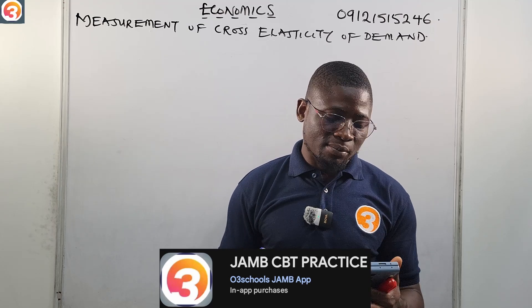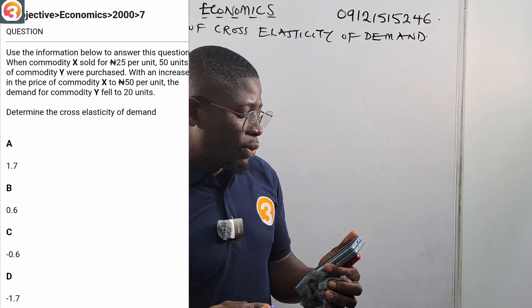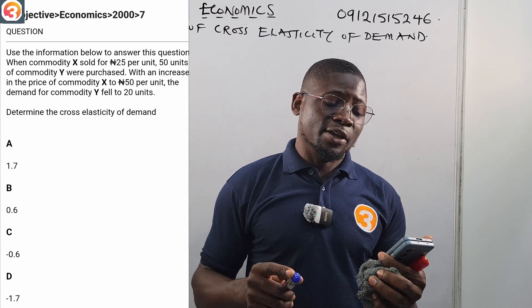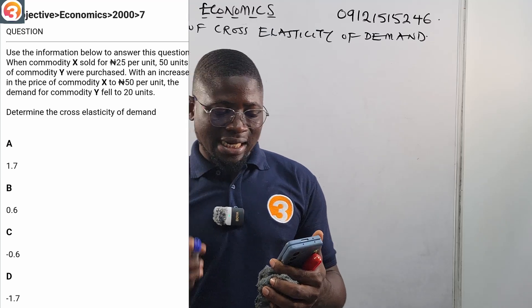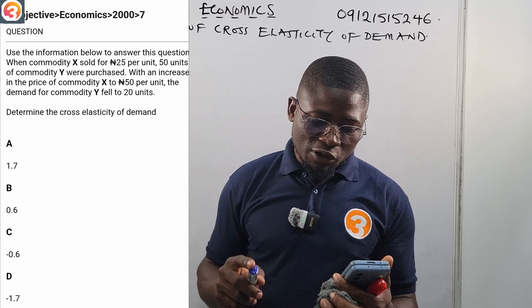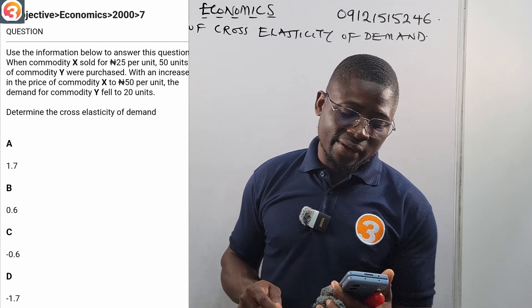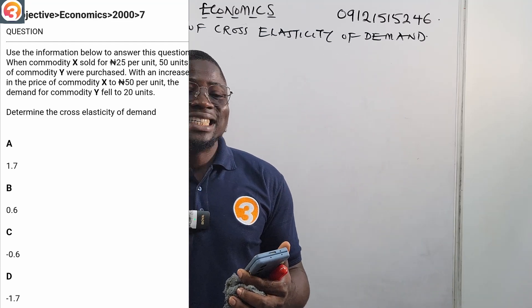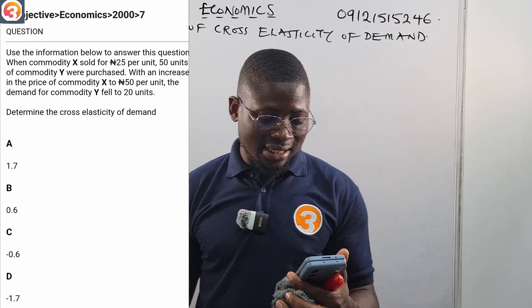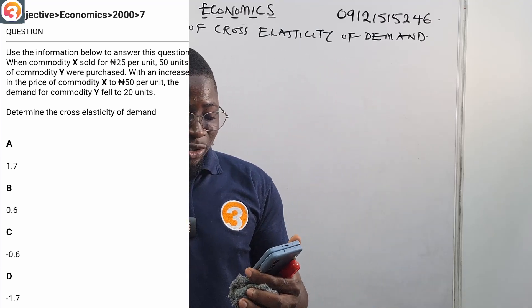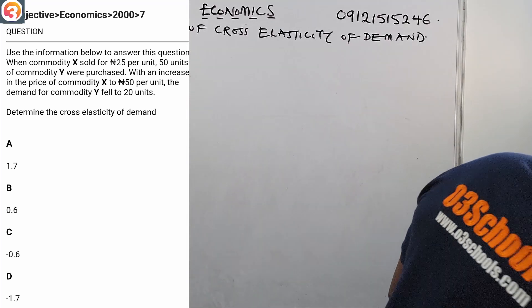Economics year 2000, number seven. It says: use the information below to answer this question. When commodity X sold for 25 naira per unit, 50 units of commodity Y were purchased. With an increase in the price of commodity X to 50 naira per unit, the demand for commodity Y fell to 20 units. Determine the cross elasticity of demand. A: 1.7, B: 0.6, C: -0.6, D: -1.7.